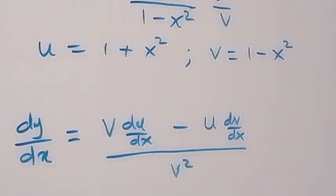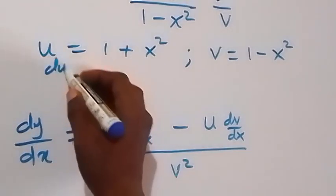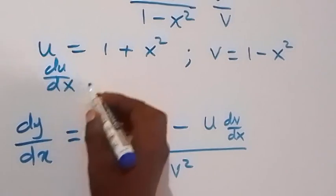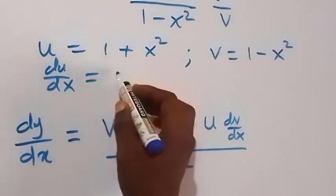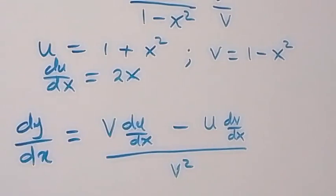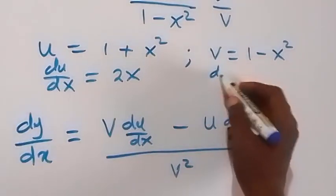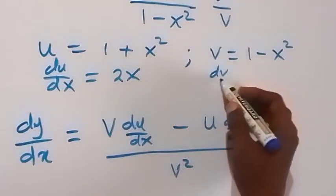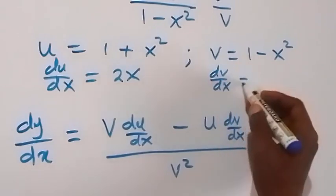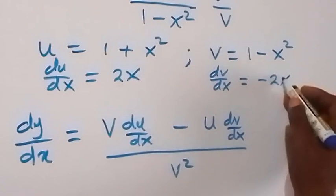We can find du/dx here. When we differentiate u with respect to x, this gives us 2x. Then we also differentiate v with respect to x, and dv/dx gives us minus 2x.